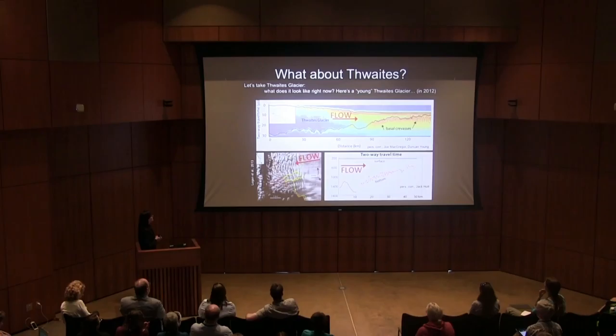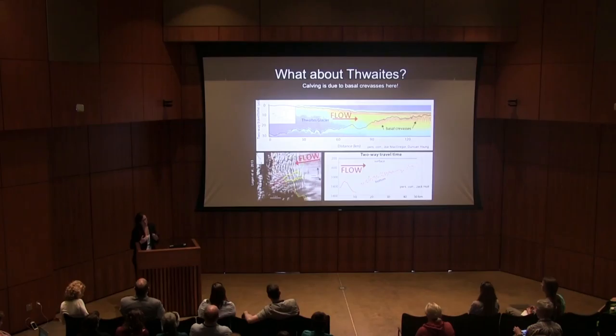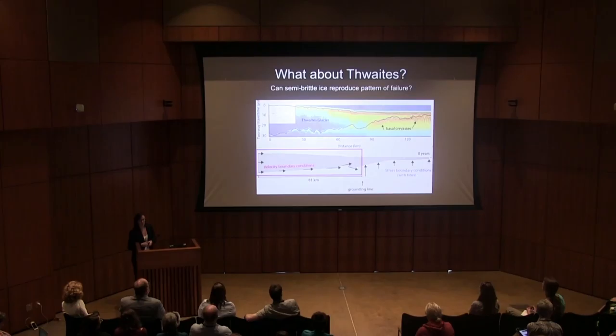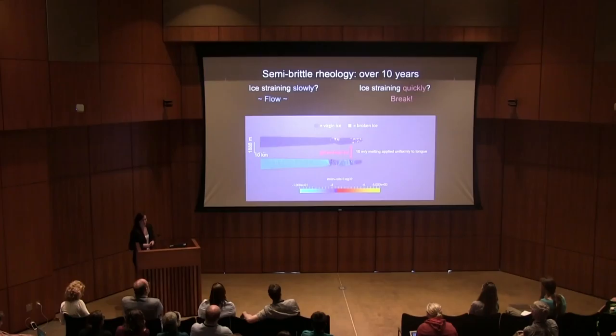Here's an echogram of Thwaites Glacier — there's the top and bottom of it. The hot red over here are basal crevasses. Here's some more detailed geometry of the floating tongue. Calving at this location is really due to and determined by the spacing of basal crevasses, which are formed at the grounding line. If we can get toward understanding the time-dependent failure of ice at the grounding line at this particular location, we might be well on our way to understanding different fates of Thwaites under different circumstances. Using the echogram to create a simplified domain, cutting off the tongue since we're really interested in failure at the grounding line, and prescribing some kinematic boundary conditions — what do we get?